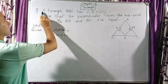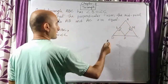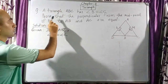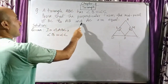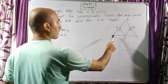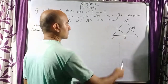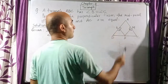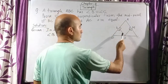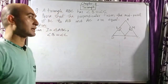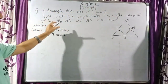The question is: triangle ABC has angle B equal to angle C. From the midpoint D of BC, two perpendiculars are drawn — DL perpendicular to AB and DM perpendicular to AC. You have to prove that DL is equal to DM. The question is short, but you need to understand what it is asking.